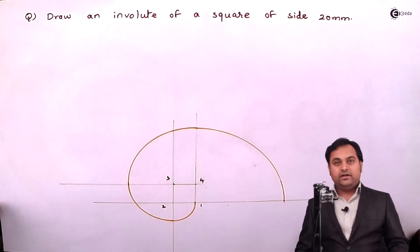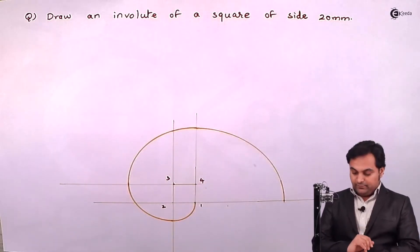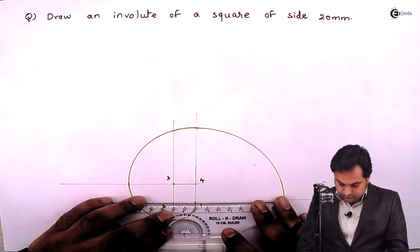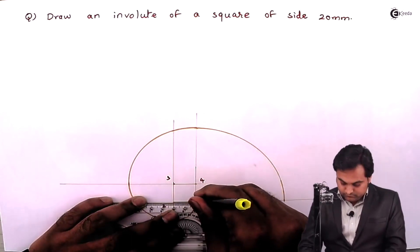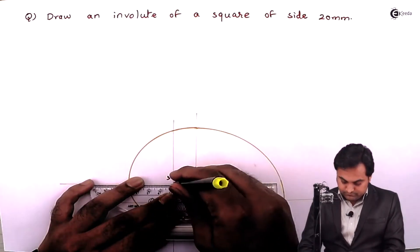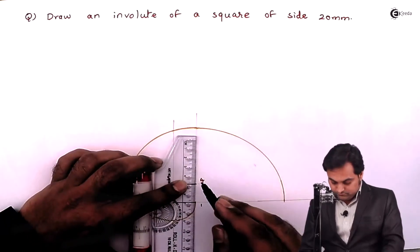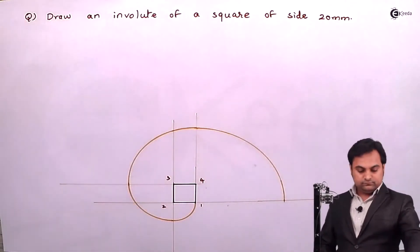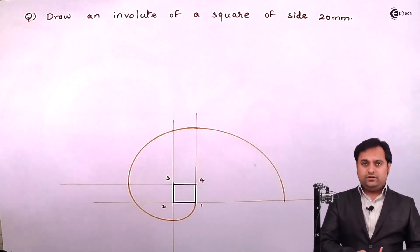Then after making it light, here I'll be drawing this involute dark, then making this curve dark.